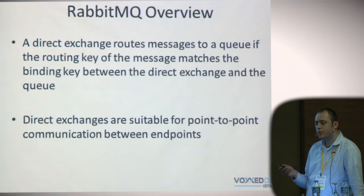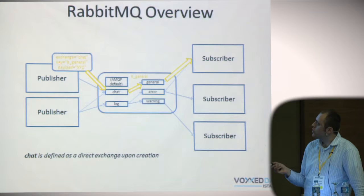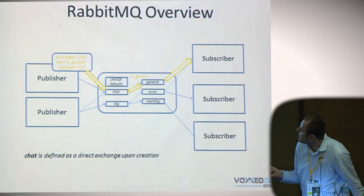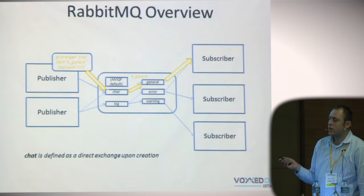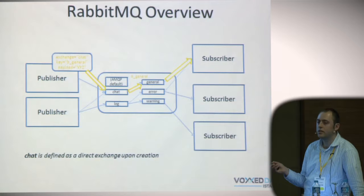Direct exchanges are similar to default but use the binding between the exchange and the queue. If you send a message to a direct exchange named 'chat' with a key of 'bgeneral', it is sent to a queue that has a binding to that exchange with the key 'bgeneral'. The matching is done based on the message key and the binding name between the exchange and the queue.